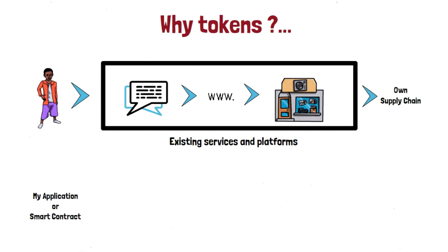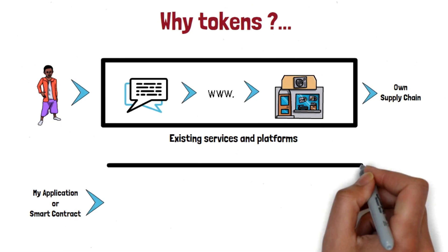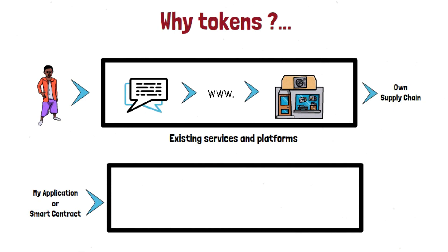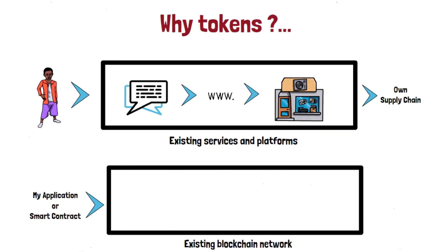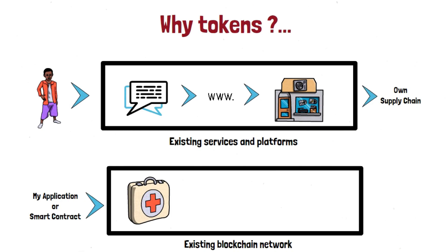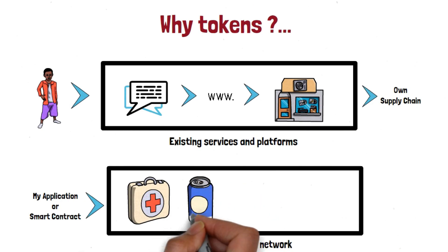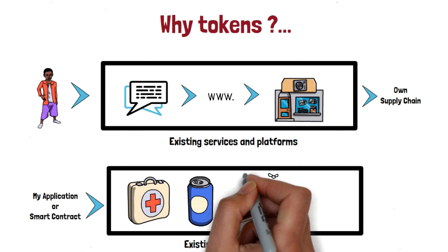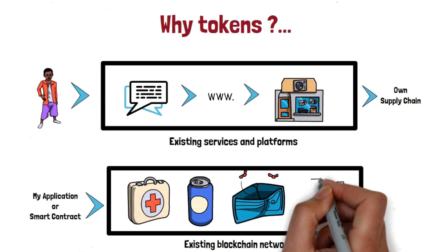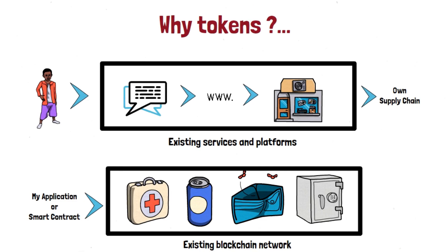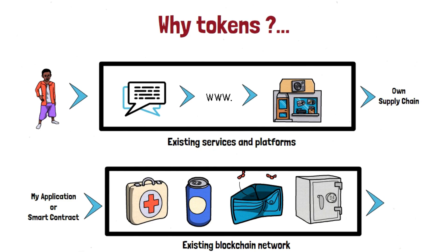Let's say I'm writing a smart contract — or simply call it a project — and I want a token for it. If I want a coin, I need a complete blockchain of my own. Creating and maintaining a complete blockchain is not a small thing. So instead, I find which existing blockchains are available and which one provides the services I need — like gas for transaction costs, a wallet, security, and privacy.